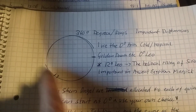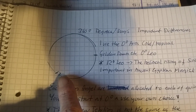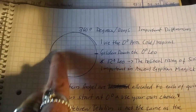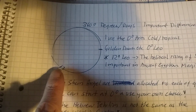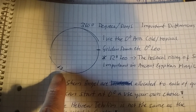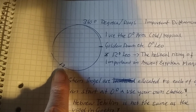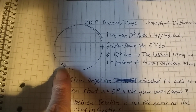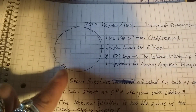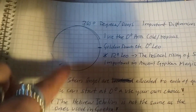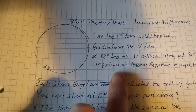And then we have Leo around here, and they start at zero degrees of Leo. Going around five degrees, and then in the Egyptian ancient magic tradition, they used the 12 degrees of Leo in the heliacal rising of Ceres. So that was the Lionsgate and the importance of that date, and they start the whole circle at that time.